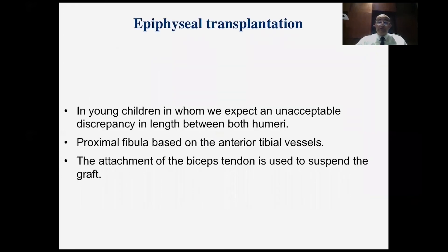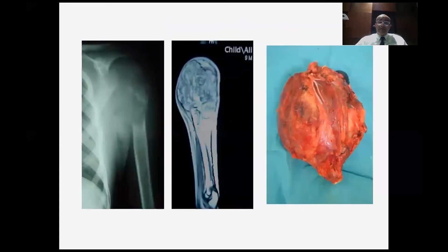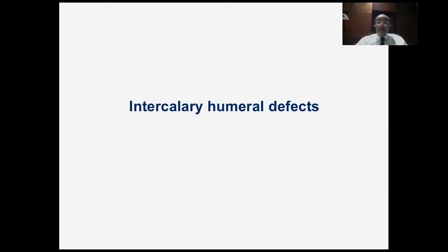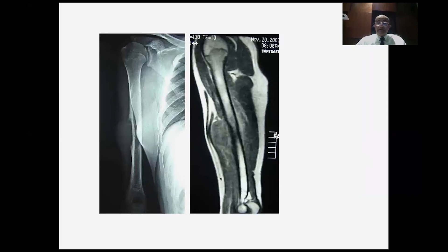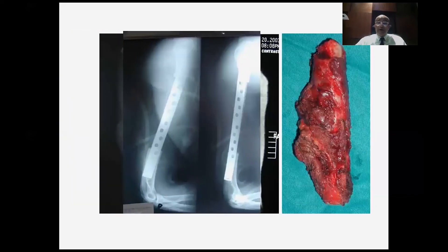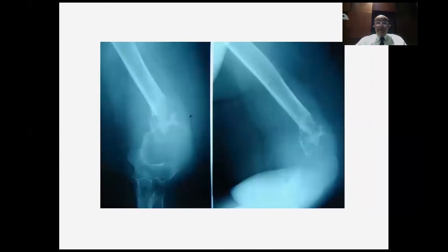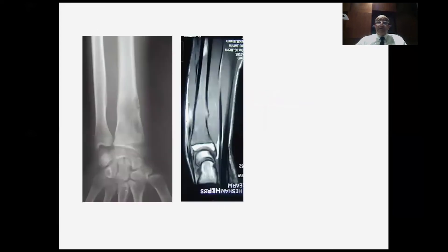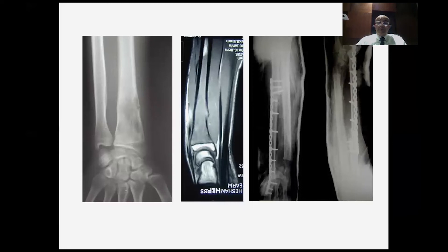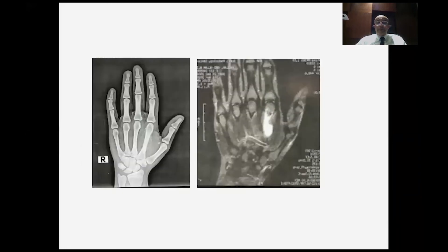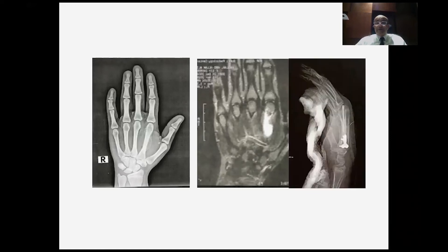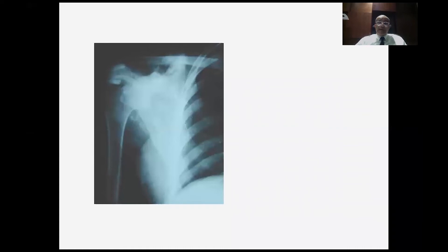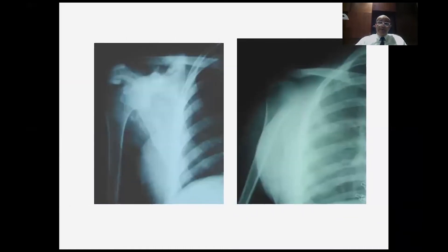Epiphyseal transplantation is used in children to maintain the length of the humerus. After resection of the proximal humerus, we use the proximal fibula vascularized based on the anterior tibial vessels that supply the epiphysis to maintain humeral length. Intercalary humeral resections are usually reconstructed with vascularized fibular graft. For distal humeral defects — like this patient with metastatic thyroid cancer — reconstruction is done with a modular prosthesis. For distal radial reconstruction, we use non-vascularized fibula with wrist fusion. For a Ewing sarcoma of the metacarpal, the bone was resected and reconstructed with recycled metacarpal bone. Following scapulectomy for malignant tumors of the scapula, we usually use no reconstruction — we suspend the humerus to the clavicle or chest wall.